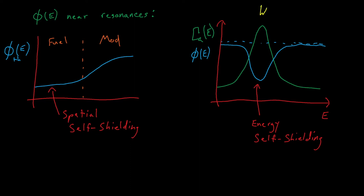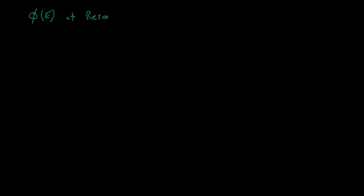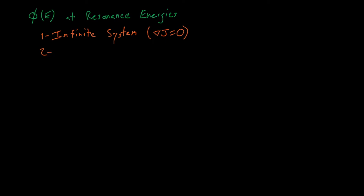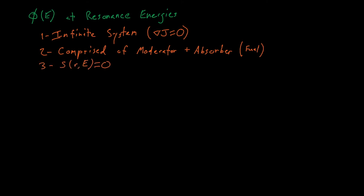For now, we're going to solve for the flux spectrum in the vicinity of absorption resonances. To do this, we'll look at the zeroth moment of the Boltzmann transport equation. We'll make three assumptions: first, that we have an infinite system; second, that our system is only comprised of some fuel and some moderator; and third, that our fission source is equal to zero for slowing down energies. We've already discussed how the third assumption is reasonable for slowing down energy neutrons.